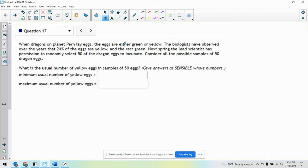This is when dragons on planet Pern lay eggs. The eggs are either green or yellow. Biologists have observed that 24% of the eggs are yellow and the rest green. Next spring, the lead scientist has permission to randomly select 50 of the dragon eggs to incubate. Consider all possible samples of 50 dragon eggs.